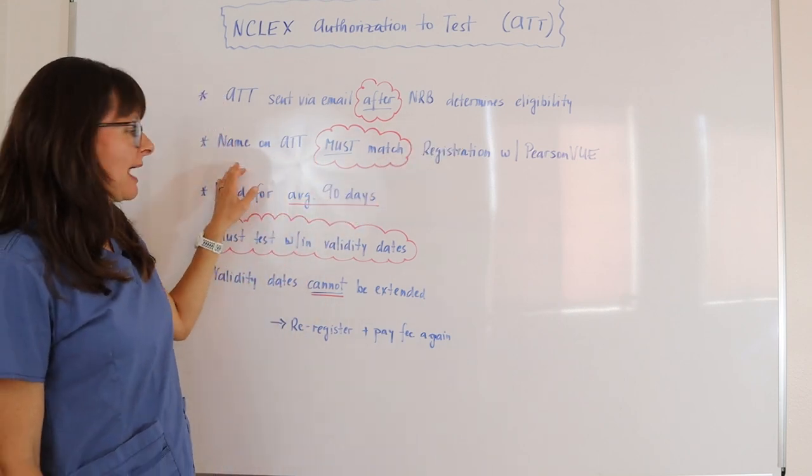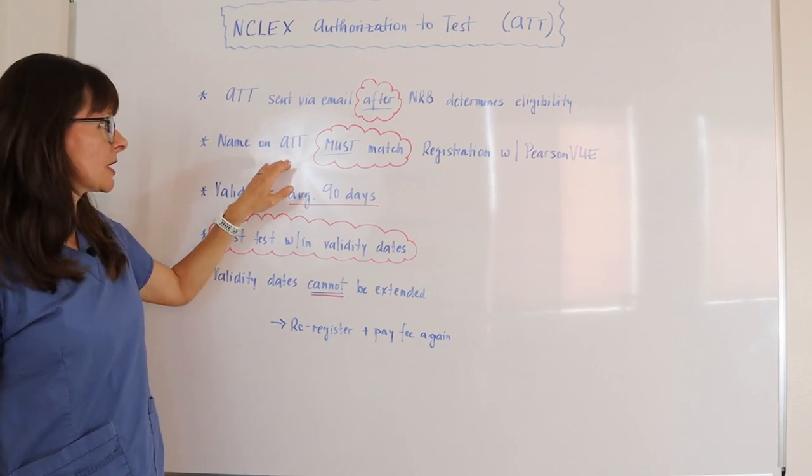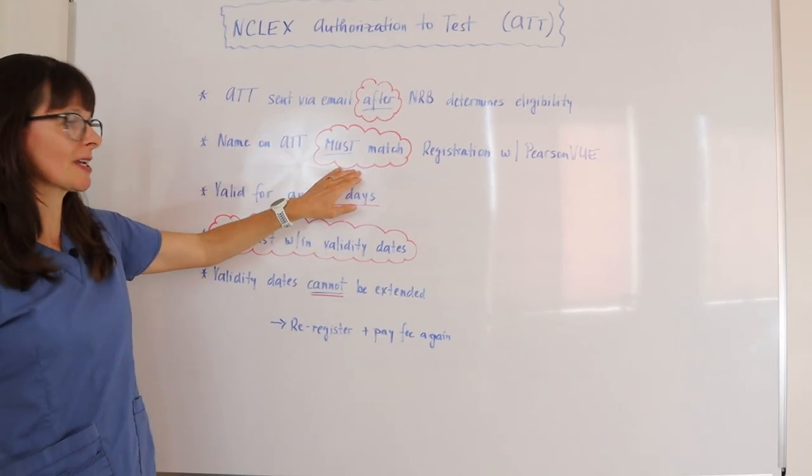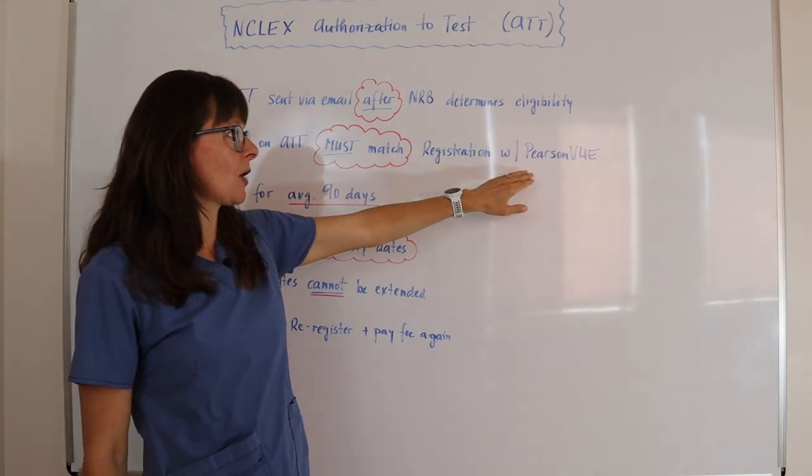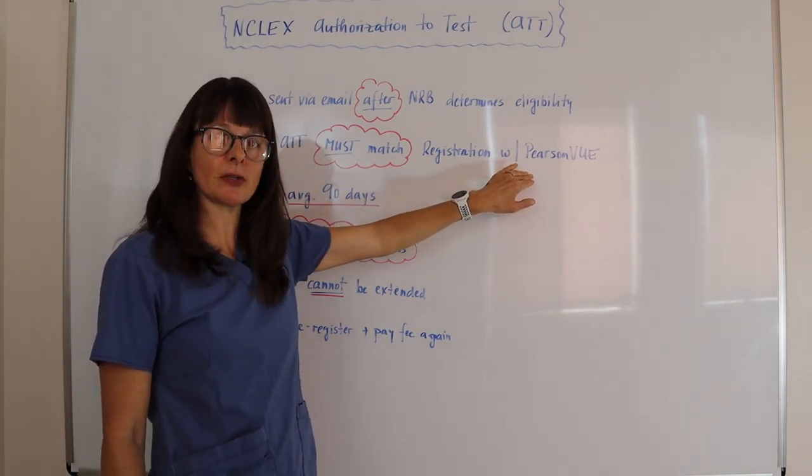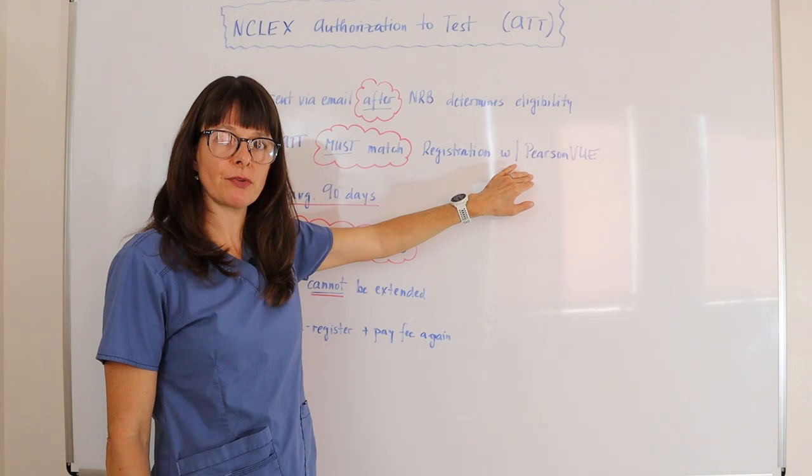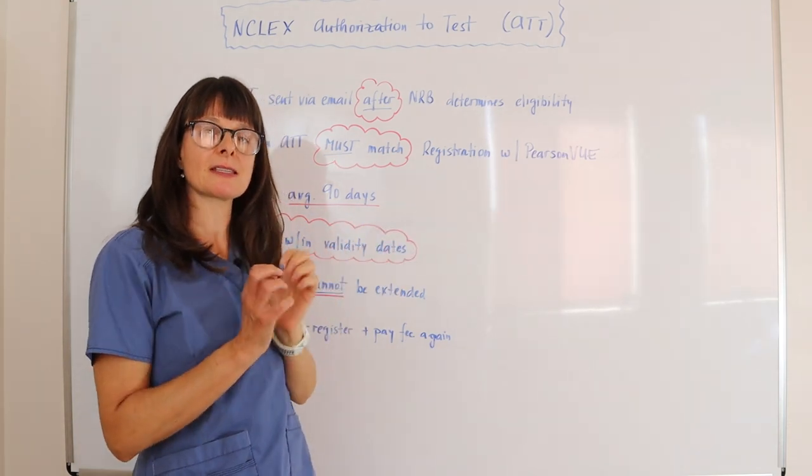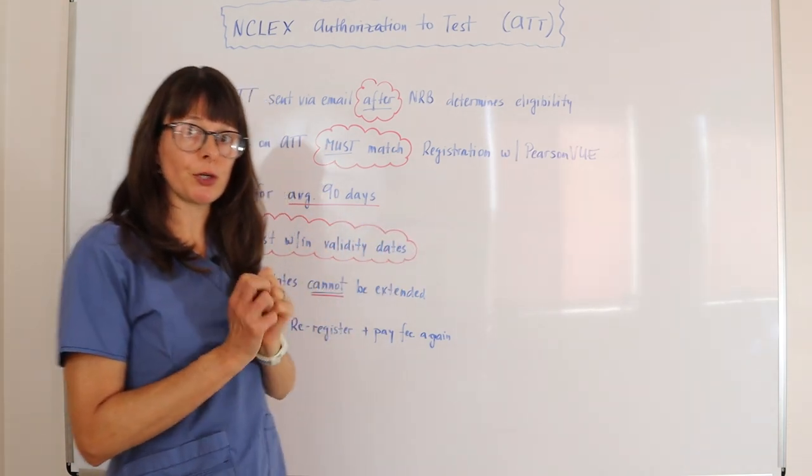The name that you have on the authorization to test must match exactly the registration that you have with Pearson VUE. So the NRB and the Pearson VUE registration must have the exact same name for you on file.